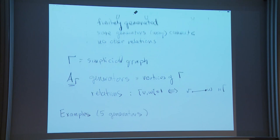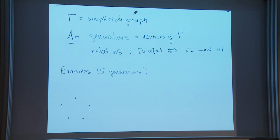I thought I would draw some examples on five generators. There's an example of a graph that doesn't have any edges. It's got five generators and none of them commute, so that's the free group.